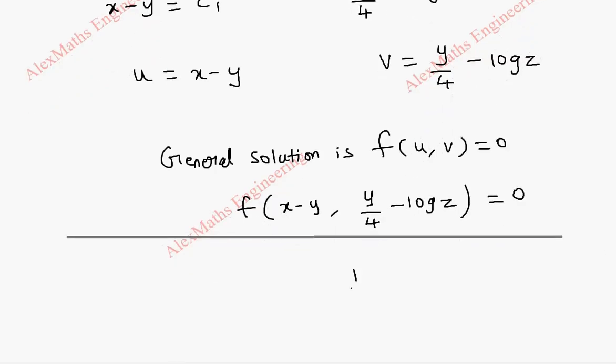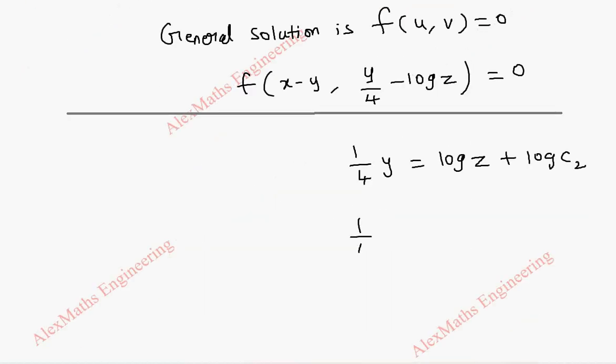We already have 1 by 4y equal to log z, and we can take it as log c2. Now using the log rule, we can combine the other side. Log a plus log b is log ab.